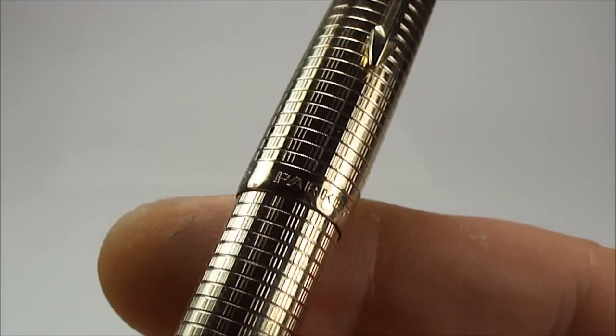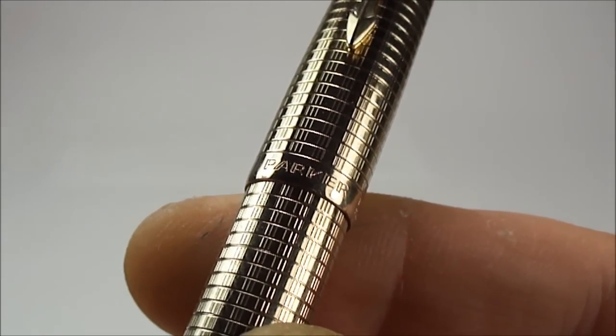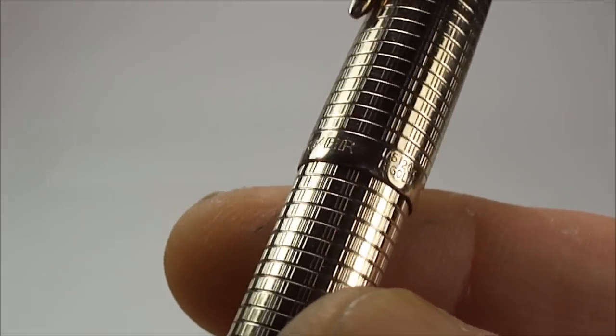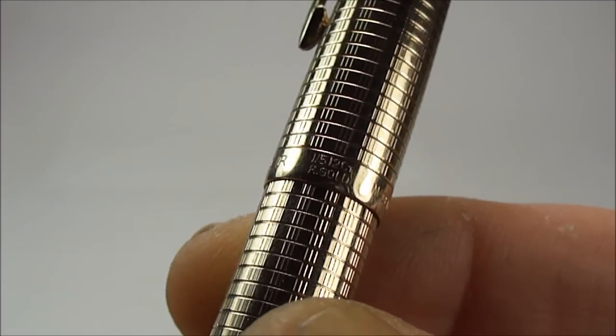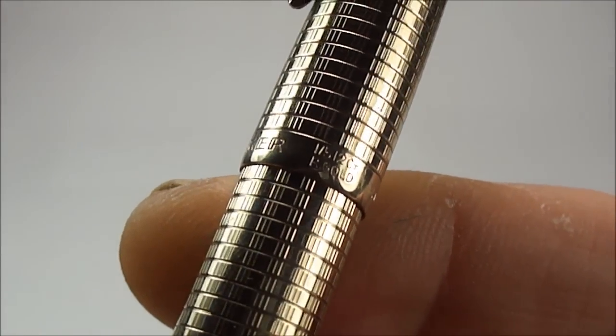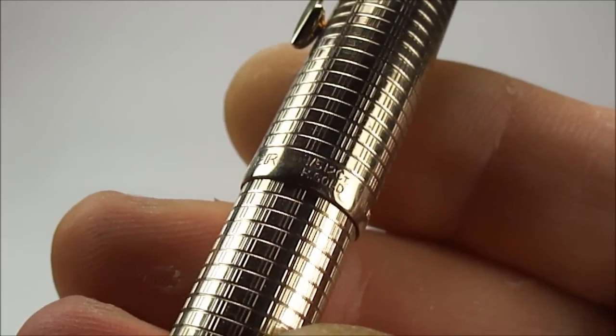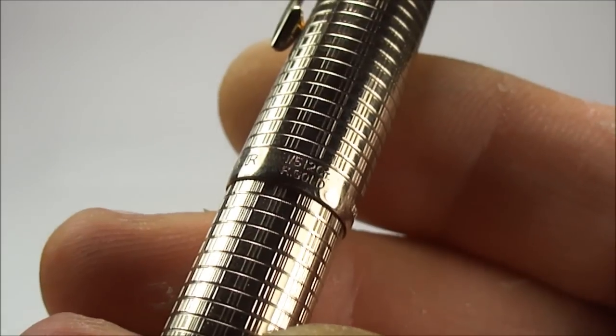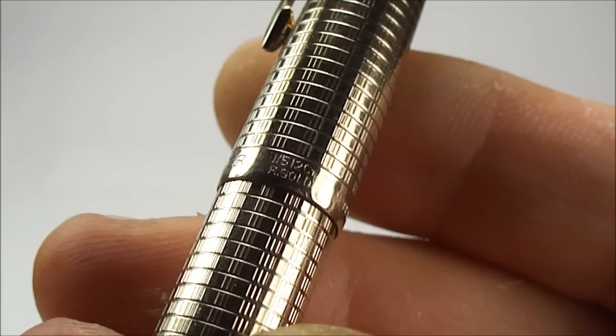To the bottom of the cap, you'll see it has Parker to the front there. Now if we move it round slightly, I'm hoping you can see it says one in five 12 carat rolled gold.